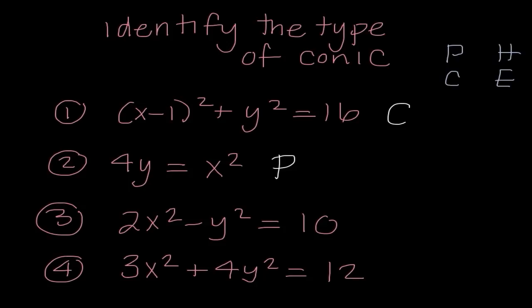Number 3: 2x squared minus y squared. They're both squared but there's subtraction, so it's a hyperbola. And lastly, 3x squared plus 4y squared — they're both squared, it's addition, but they have different coefficients, so that makes this an ellipse. That covers the first section of our test.